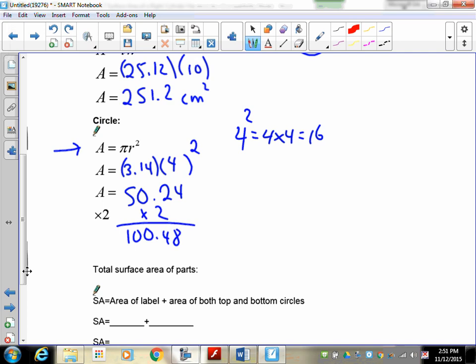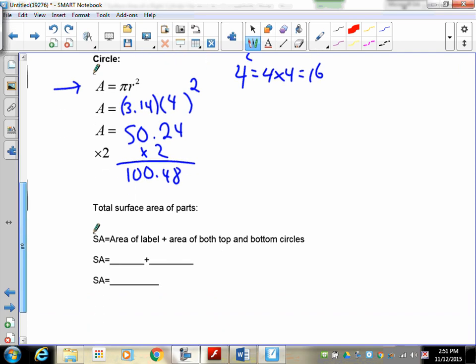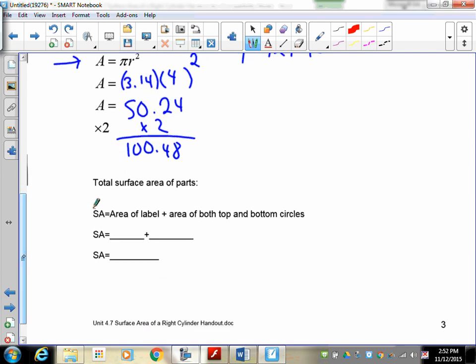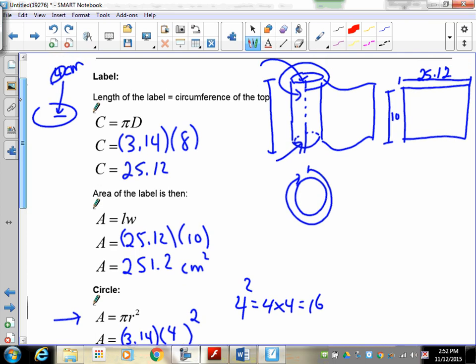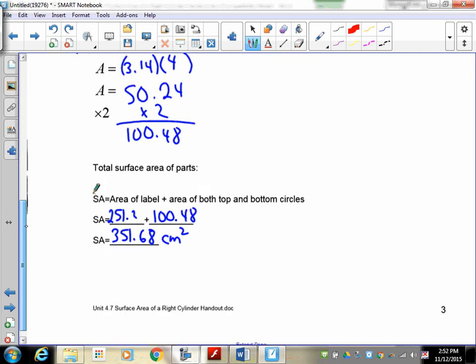So, the last thing we have to do now is put these two pieces together. Our label was 251.2. And our circles were 100.48. So, we take those two together, and you get 351.68. And, of course, we're in centimeter squares. We're doing surface area. So, take a look at it. Rewind it. And look at it over and over until you get the idea of what you're doing here. Okay. Turn the page.